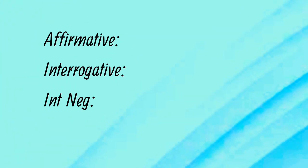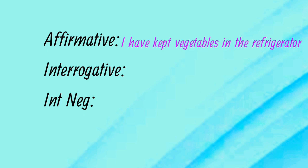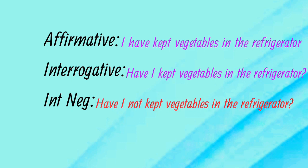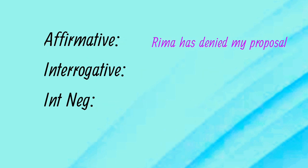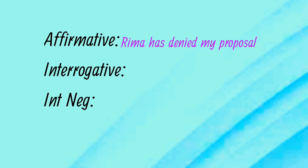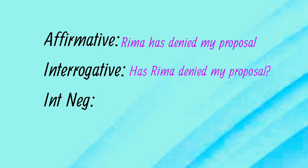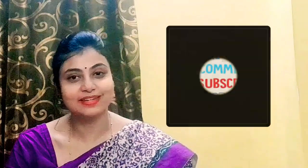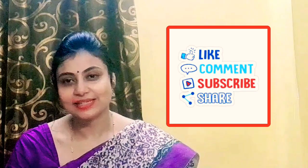Now we will make interrogative and interrogative negative sentences. Example 1: Affirmative — 'I have kept vegetables in the refrigerator.' Interrogative — 'Have I kept vegetables in the refrigerator?' Interrogative negative — 'Have I not kept vegetables in the refrigerator?' Example 2: Affirmative — 'Rima has denied my proposal.' Interrogative — 'Has Rima denied my proposal?' Interrogative negative — 'Has Rima not denied my proposal?' Hope you have understood present perfect tense. Next time I will come with present perfect continuous tense. Bye bye.